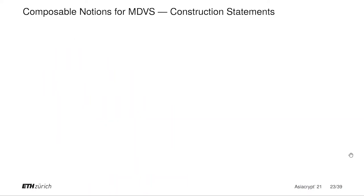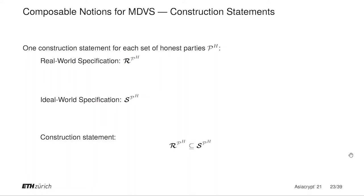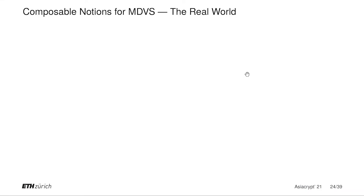The statements we make will be of the form: for each set of honest parties, we define a real-world specification and an ideal-world specification for that same set of honest parties. Then we make statements that the real-world specification for the set of parties P_H is a subset of the ideal-world specification for the same set of honest parties. Now let's have a look at the real-world specification for multi-designated verifier signature schemes. We assume again that we have three receivers: Bob1, Bob2, and Bob3, all of them honest.